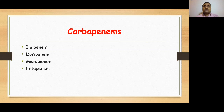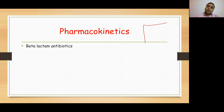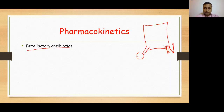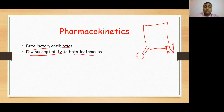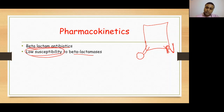Regarding the properties of carbapenems: number one, regarding their structure, they have the beta-lactam ring, which is the reason they are termed beta-lactam antibiotics. Number two, they have low susceptibility to beta-lactamases, which means bacteria producing resistance through beta-lactamase enzymes may still be susceptible to carbapenems, because carbapenems have low susceptibility to those beta-lactamase enzymes.